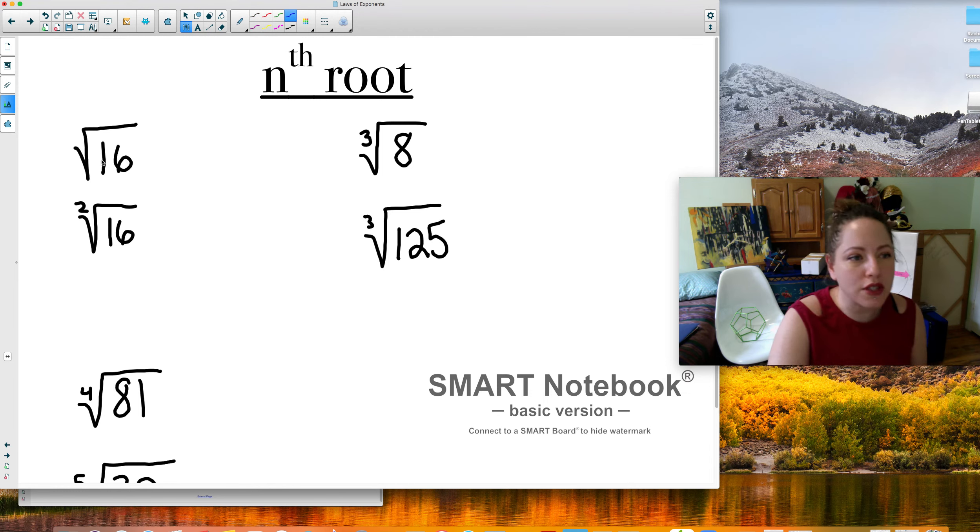So the first thing is, what does a square root mean? This is what we've always called a square root, but we've never really thought about that word square. So what it really means is that there's a number squared that equals 16. So what number times itself 2 times equals 16? And the answer is 4. We know that.